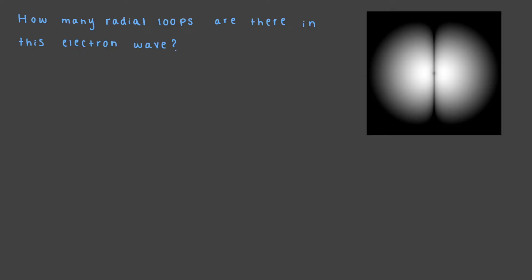How many radial loops are there in this electron wave? Correct! Recall that radial loops look like concentric rings in the electron wave. Here, we can see one ring that is bisected by one nodal plane. Therefore, there is one radial loop and one nodal plane.